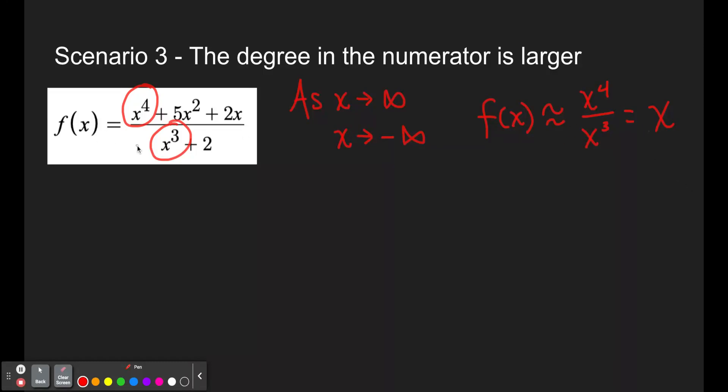So this function, f of x, literally behaves just like x as x goes to infinity and negative infinity. So as x goes to infinity, f of x also goes to infinity, because f of x is just behaving like x. So this is going to be two separate statements, so I'm going to rewrite them. As x approaches infinity, f of x approaches exactly the same thing x approaches, so it also approaches infinity.